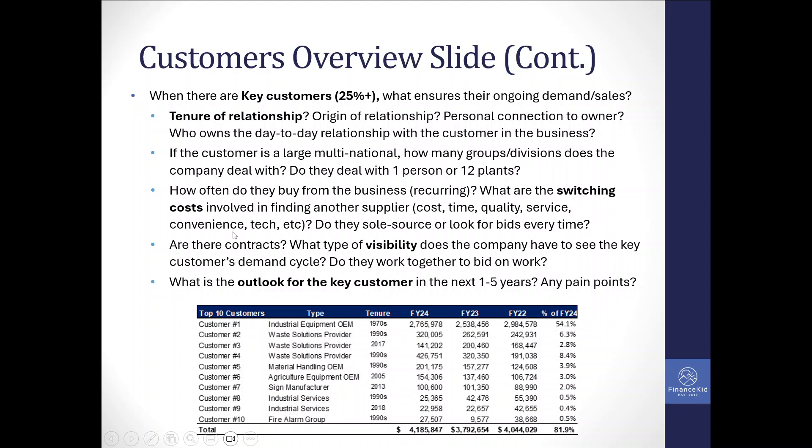The last points on the customer slide: some businesses work on production schedules with a demand forecast for the next 6-12 months. It was easy to communicate to the buyer what demand looked like for the next six to twelve months, reassuring them that not only does the customer need you, but they've already factored in your supply for that period. Even if they wanted to switch, it would be a phased-out approach, not overnight, because of how integrated the supplier is in the customer's processes. As a buyer, understand both the revenue visibility for that customer and how integrated your supply is into their manufacturing or delivery process.